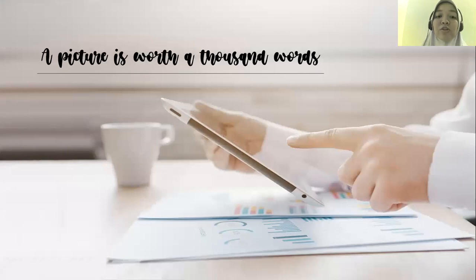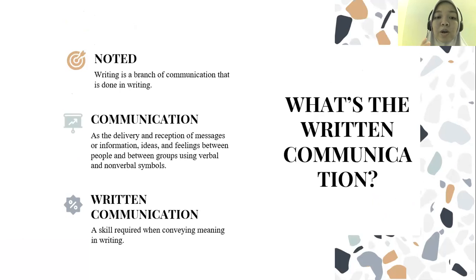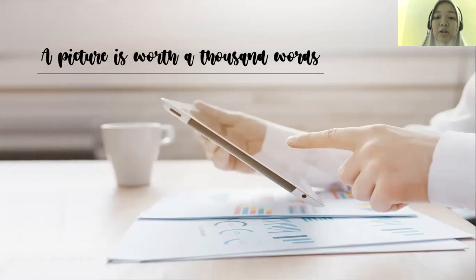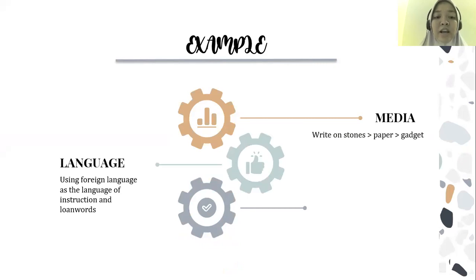Today we will focus on written communication. Written communication is a skill required when conveying meaning in writing. For example, in ancient times humans wrote on stone, leaves, and even animal skins, before switching to paper as a writing medium. Unlike today, almost all people in the world have switched to using technology as a writing medium. Not only the media, but the grammar and language style are constantly changing, such as the use of foreign language as the language of instruction and the use of loan words in the national language.